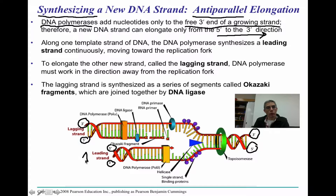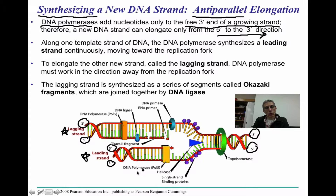We have two different types of strands: the leading strand and the lagging strand. When the DNA untwists, each side serves as a template. The leading strand is the strand that will replicate continuously. As the helicase untwists the DNA and forms a replication fork, the DNA polymerase simply comes in and adds nucleotides—the A's, T's, C's, and G's—to that leading strand. For the leading strand, it's pretty simple.